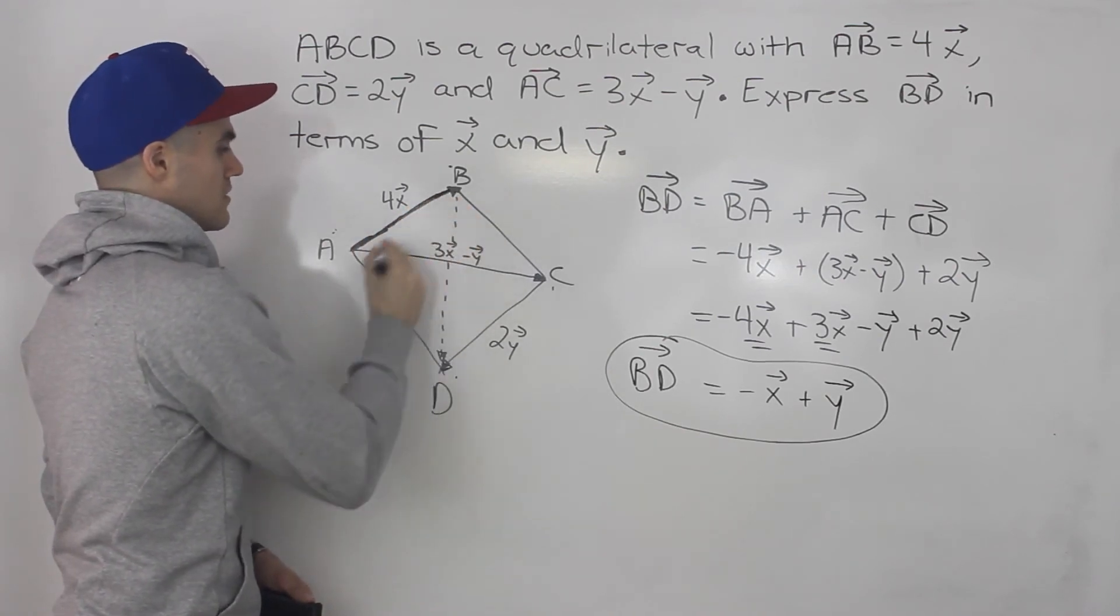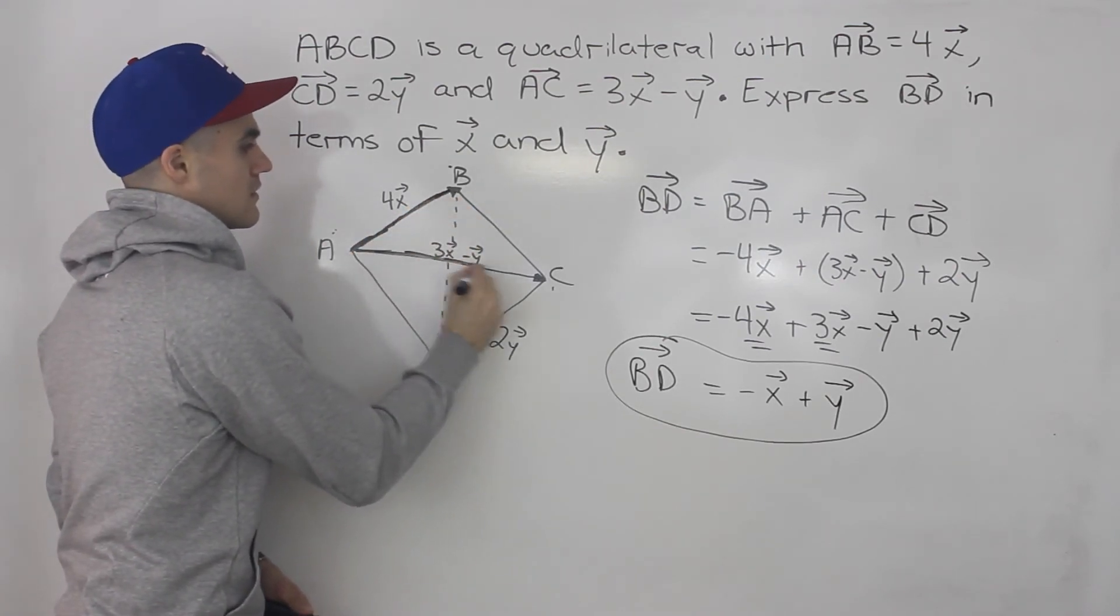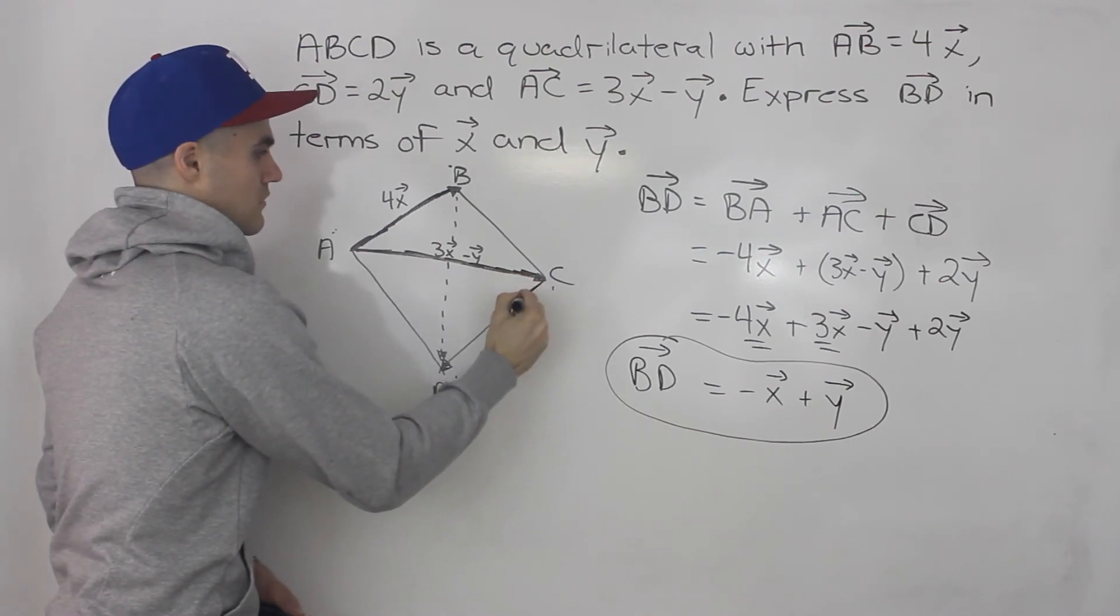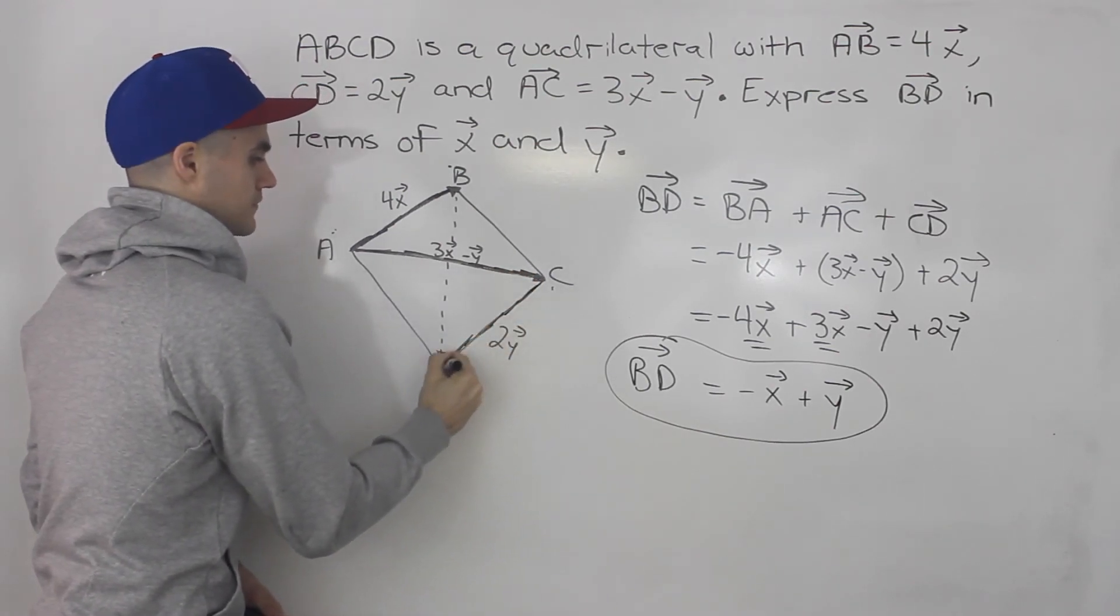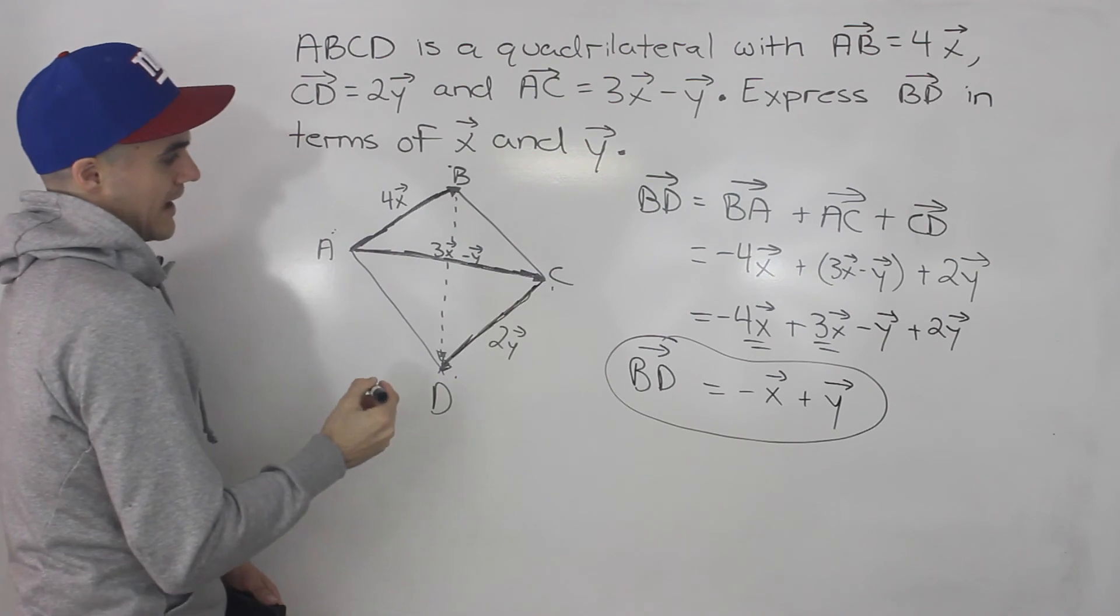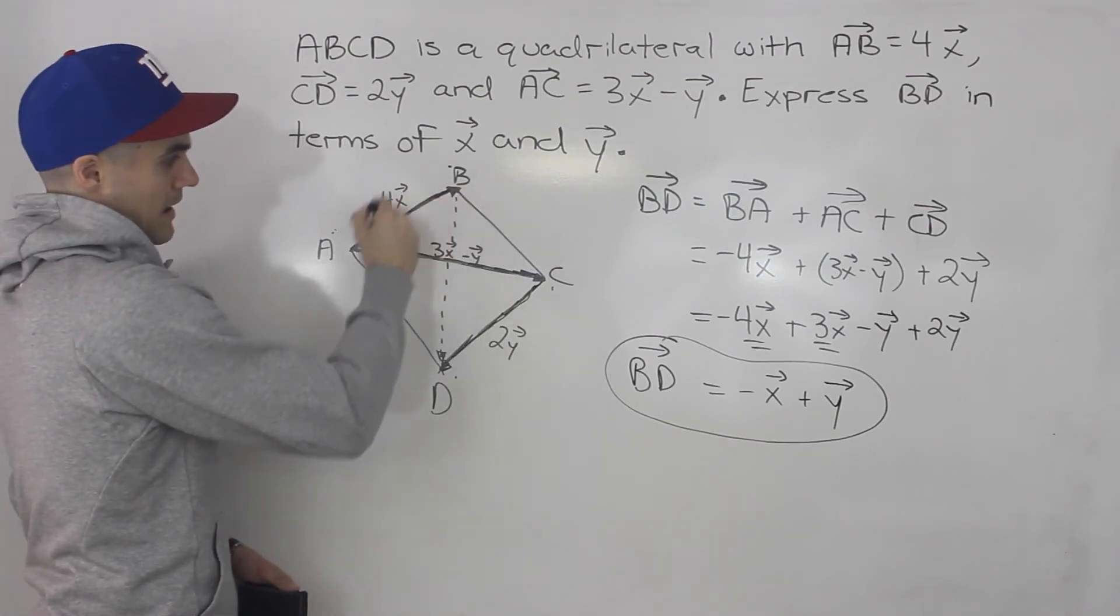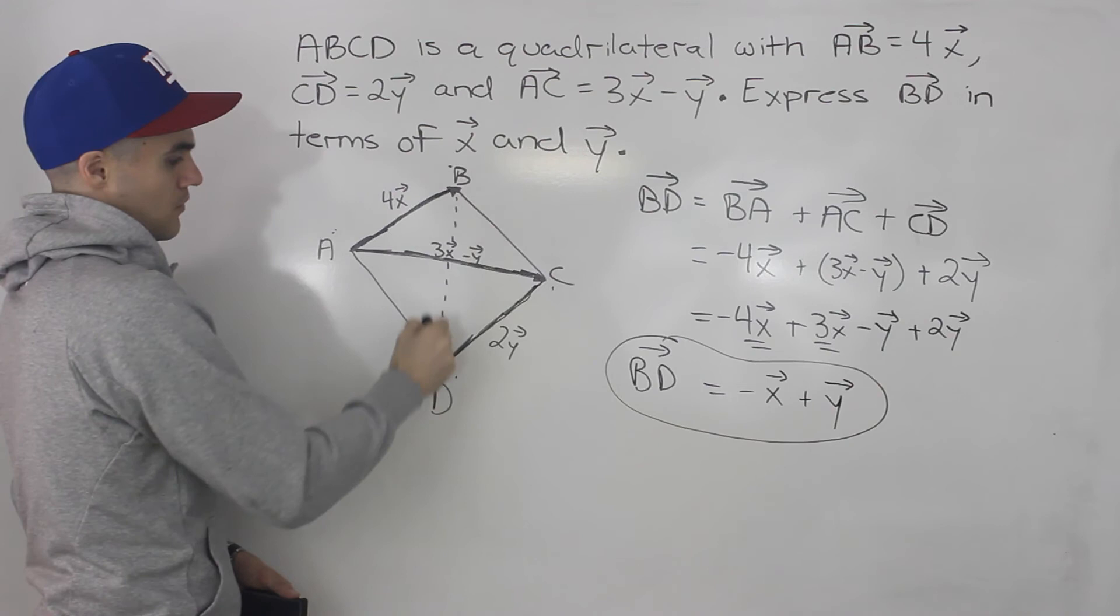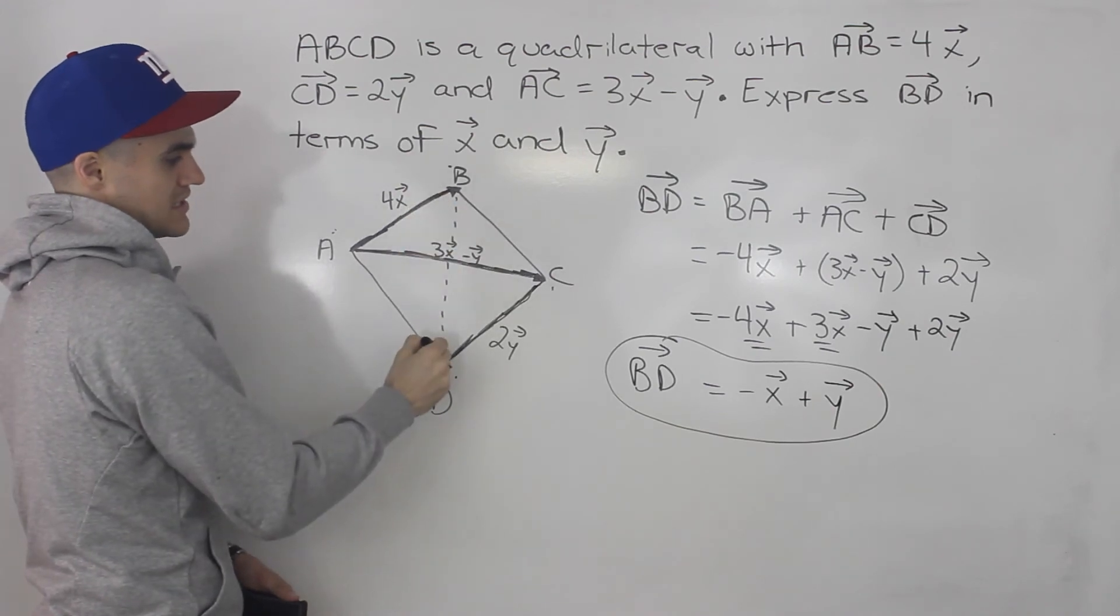Notice we are given this vector, we are given this vector, and then we are given this vector. And we had to find, somehow combining these vectors, how we can make the vector BD here.